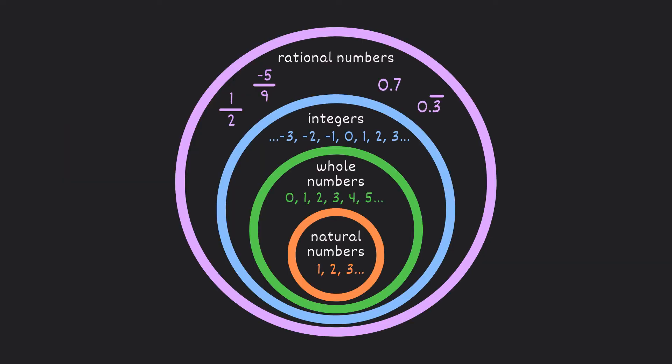These are numbers like one half, negative five over nine, 0.7, and 0.3 repeating. A rational number is basically any number in the world that you can write as a fraction. So even though 0.7 is a decimal, you can still write that as a fraction 7 over 10. And even though 0.3 repeating is a repeating decimal, you can write it as a fraction 1 over 3.